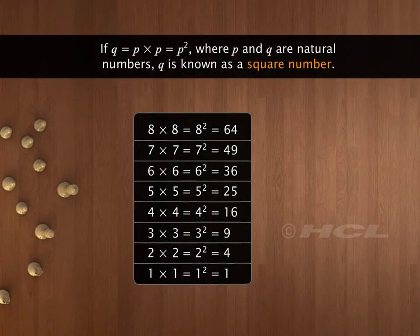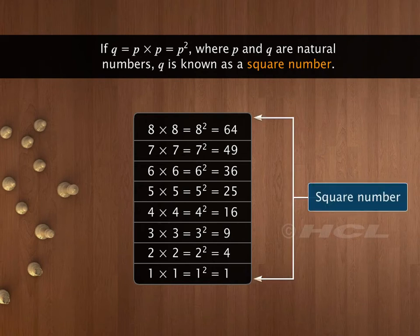In general, if a natural number q can be expressed as the square of another natural number p, then q is known as a square number.